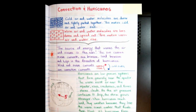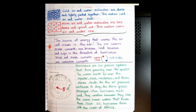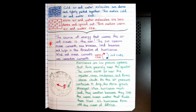Hurricanes are low pressure systems that generally form near the equator. The warm, moist air near the equator rises, condenses, and forms storm clouds. As the air pressure continues to drop, the storm grows stronger. When hurricanes reach land, they weaken because they lose the warm ocean water that feeds them.